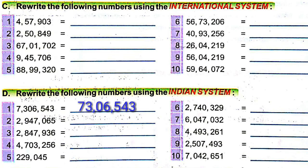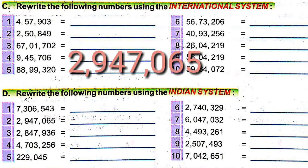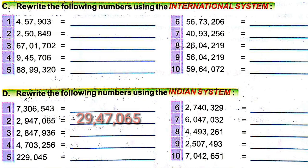The number 7,306,543 written in the Indian system is 73,06,543 — that is 73 lakh 6,543. The next number is 2,947,065. There are also seven digits. We give commas before three and five digits, that is between 9 and 4, and between 7 and 0. So the number is 29,47,065.